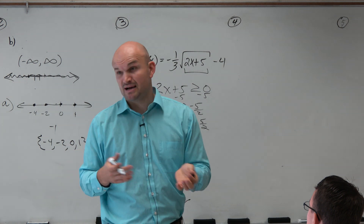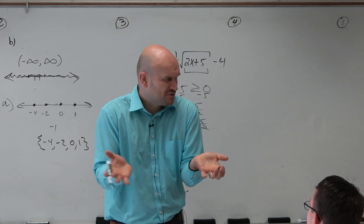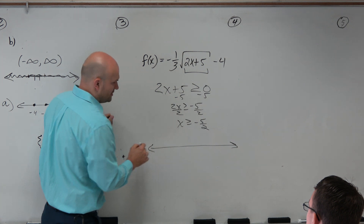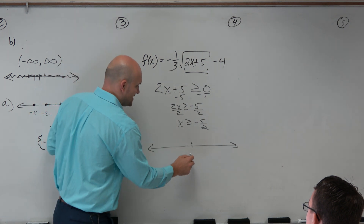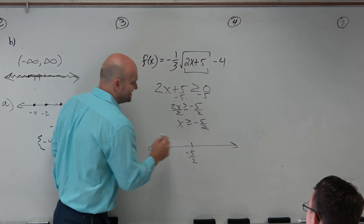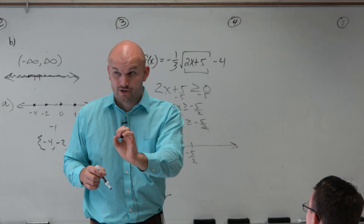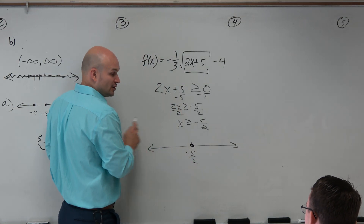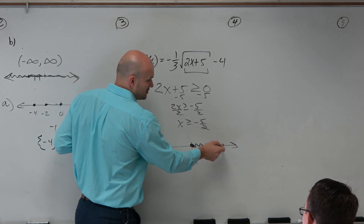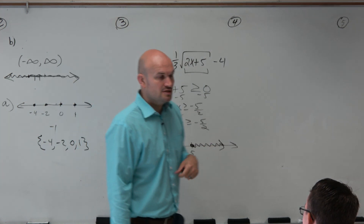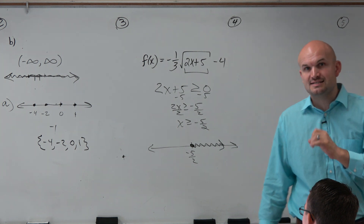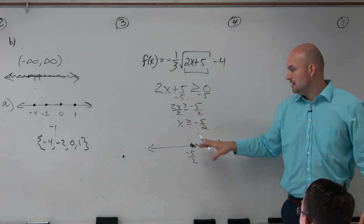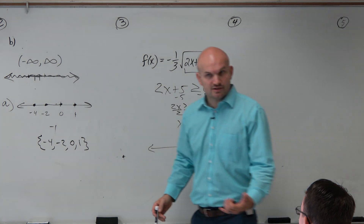Now we just need to graph that. Where is negative 5 halves? Let's just say negative 5 halves is right here. But it's greater than or equal to, so that's going to be a closed circle. And all numbers that are greater than negative 5 halves are going to go to the right. So get practice not only solving here and graphing, but then we can write the domain from this graph.